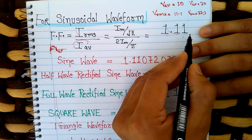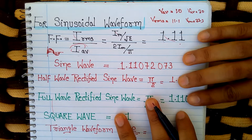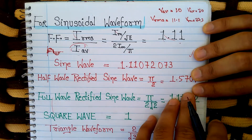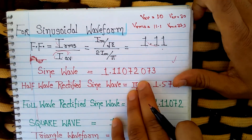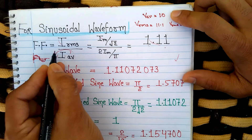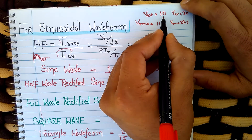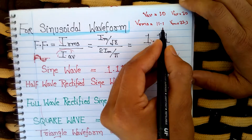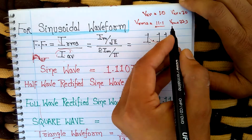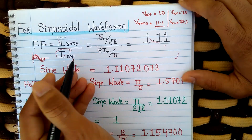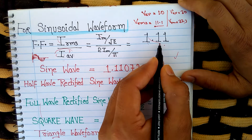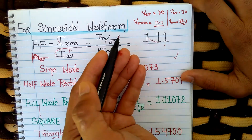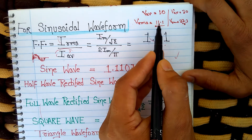The form factor for a sinusoidal waveform comes out to be 1.11. Some people say that the reason voltage levels were used in multiples of 11 in the past was due to the form factor. For example, if the average value of voltage is 10 V, multiply by form factor 1.11 and the RMS comes out to be 11.1 V. If average is 30 V, multiplied by 1.11, the RMS comes out to be 33.3 V — hence the multiples of 11.